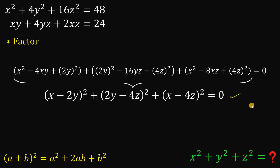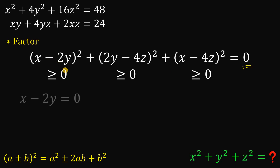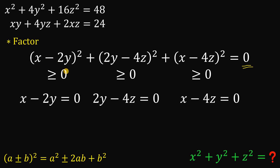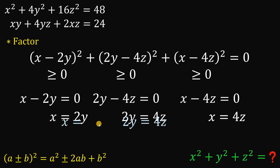Since a number squared is always greater than or equal to 0, each term is non-negative. The only way their sum equals 0 is if each expression equals 0. So x minus 2y equals 0 gives x equals 2y; 2y minus 4z equals 0 gives 2y equals 4z; and x minus 4z equals 0 gives x equals 4z. Therefore, x equals 2y equals 4z.